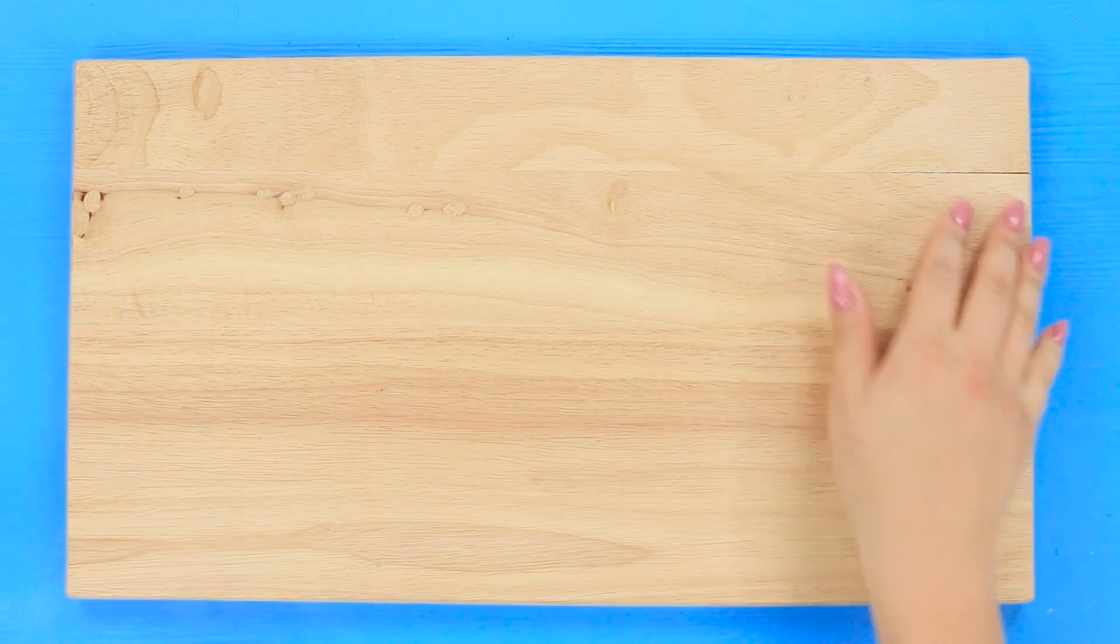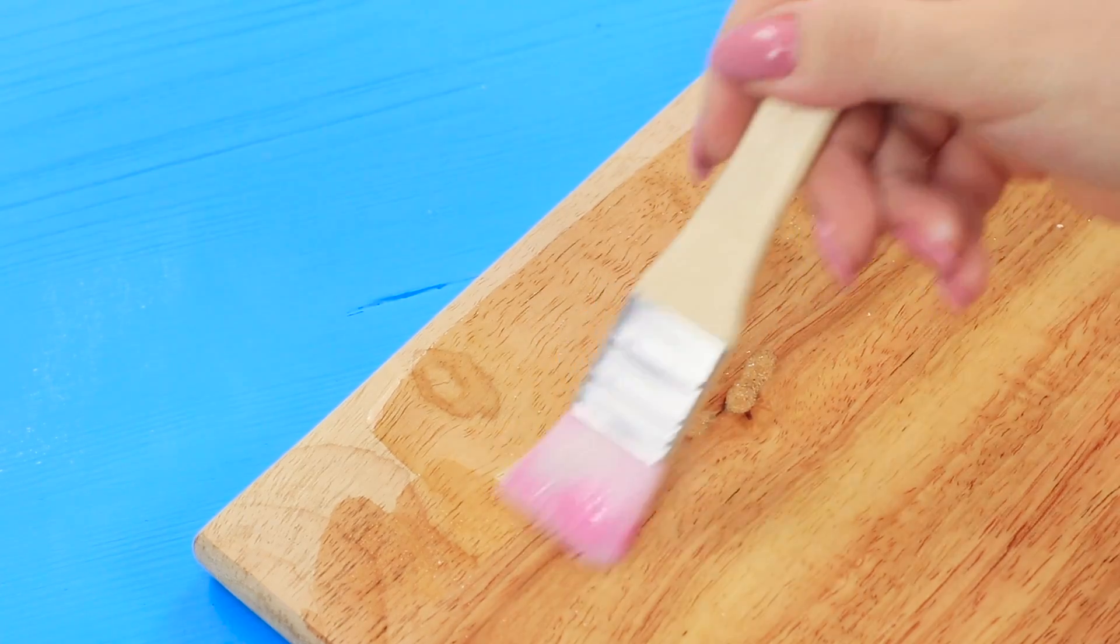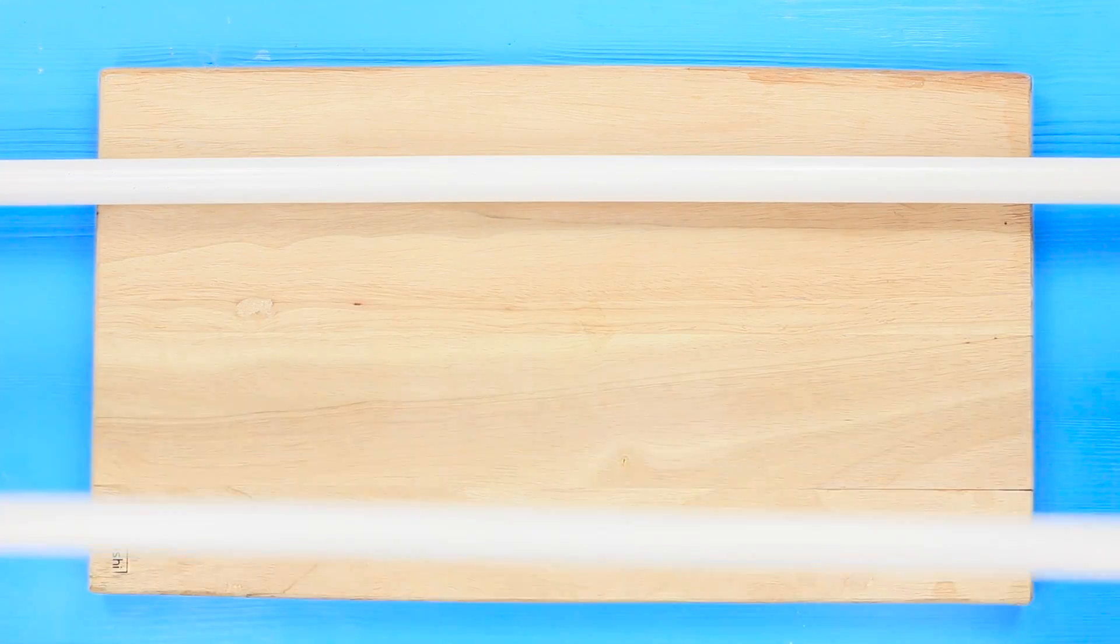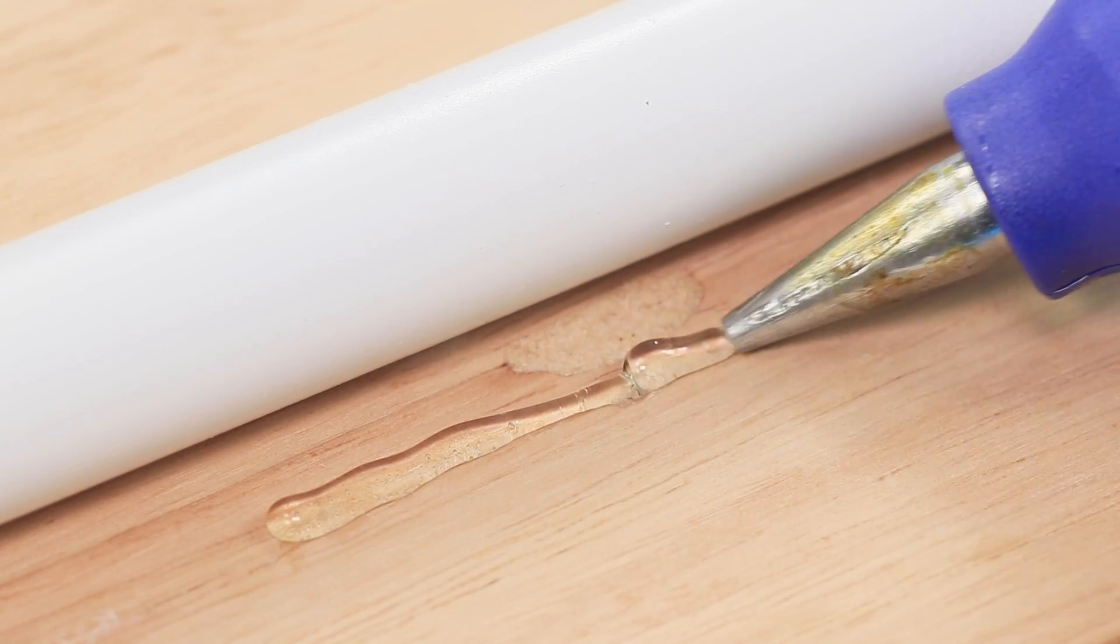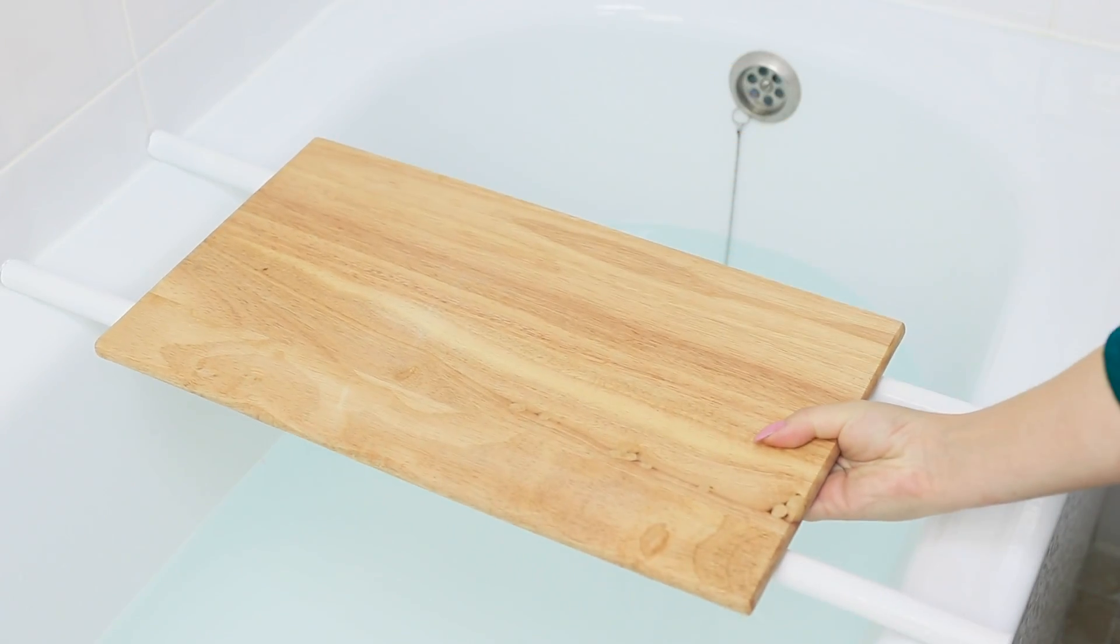And for this life hack, you are going to need a wide board. Cover the wood with varnish. This will make it resistant to moisture. Take two plastic pipes of the same size. Hot glue them to the board. Turn it upside down. What is this? It's a real bathtub tray!